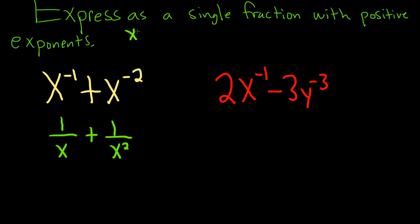You can always do that, right? Because x to the negative 1 is really the same as x to the negative 1 over 1. And when you bring it down, the exponent changes sign. Very powerful mathematics.